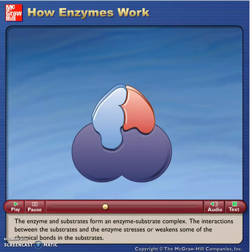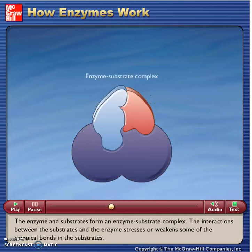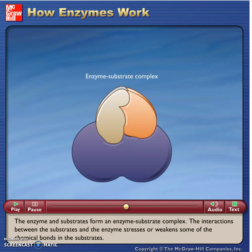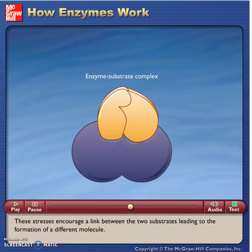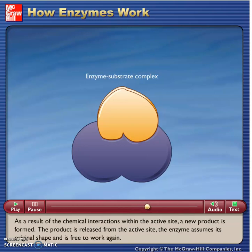The enzyme and substrates form an enzyme-substrate complex. The interactions between the substrates and the enzyme stress or weaken some of the chemical bonds in the substrates. These stresses encourage a link between the two substrates, leading to the formation of a different molecule. As a result of the chemical interactions within the active site, a new product is formed.